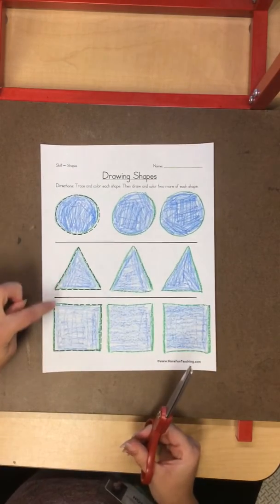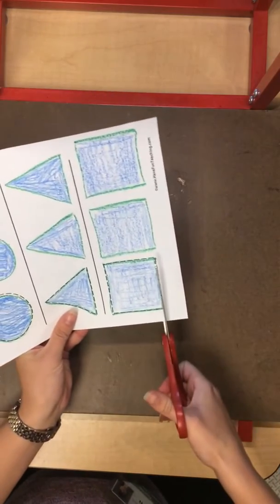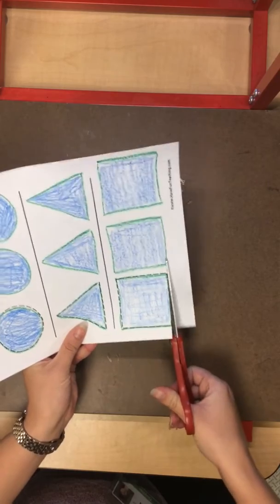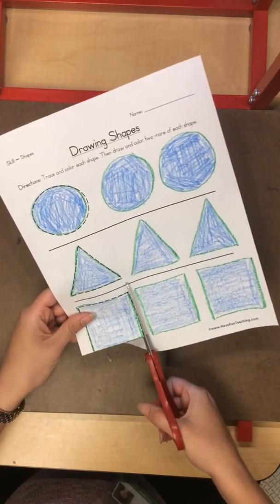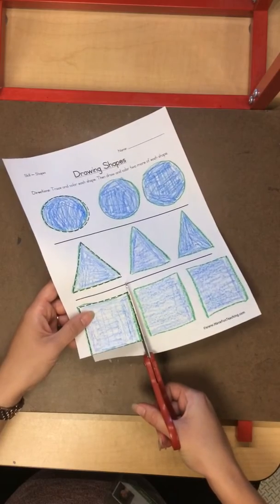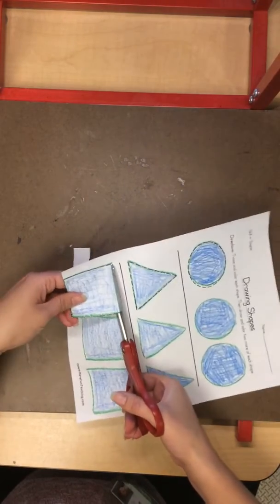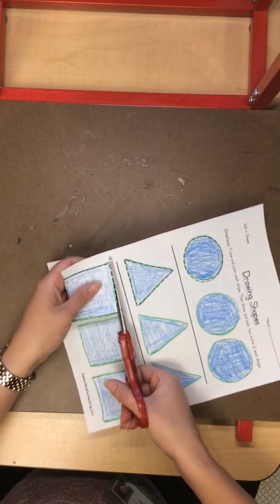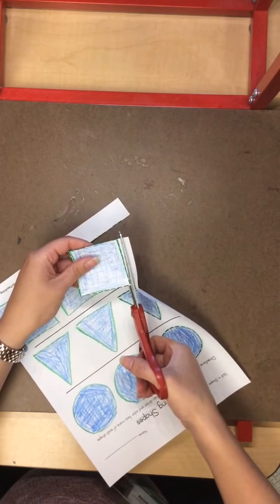We're only going to cut out the shapes that have dashed lines. So I'm just going to very carefully use my scissors to cut on the line the best I can. I'm using helper hand to turn my paper. And if I mess up on one, that's okay. I'm just doing my best.